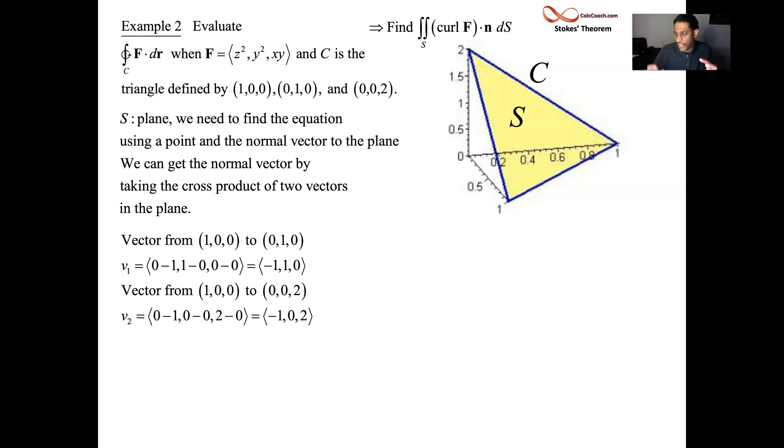The vector between two points, you take the terminal point minus the initial point. So we'll end up with (-1,1,0) for the one vector and (-1,0,2) for the other vector. Cross these two, you'll end up with 2, and then you'll end up with the opposite of a negative 2, and then you'll end up with the opposite of a negative 1. So (2,2,1) is your normal vector to the plane. All right, great.